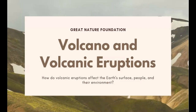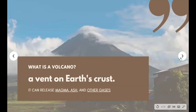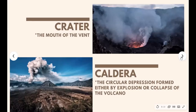Now we're going to talk about volcanoes and volcanic eruptions, because changes to the Earth's surface are not only caused by earthquakes. Geologists — scientists who study the Earth and the processes that shape it — have been able to learn more about the Earth's structure through volcanic eruptions. A volcano is a vent on the Earth's crust that can release magma, ash, and other gases. The mouth of the vent is called the crater. The circular depression formed either by the explosion or collapse of a volcano is called the caldera, and crater lakes sometimes form in the caldera.